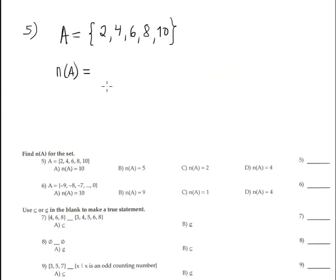Number 5 is find the cardinality number of this set A. In this case, we have 1, 2, 3, 4, and 5 elements. The cardinality is the number of elements, is 5, corresponding with option B.